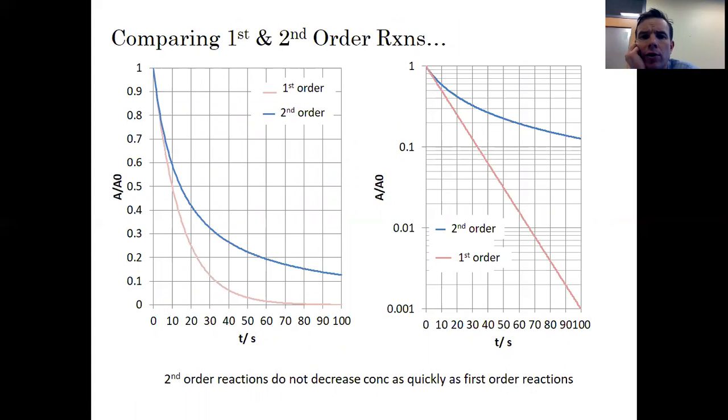I want to compare first-order and second-order reactions. So this is shown here. Initially, these have the same reaction rate. The slope of these two plots is the same. But what you can see is, over time, a second-order reaction slows down. Second-order reactions do not decrease as quickly as first-order reactions. This is on a linear scale. If you were to look on a logarithmic scale, this can result in several orders of magnitude difference in a relatively short period of time. So second-order reactions are slower in some sense than first-order reactions.